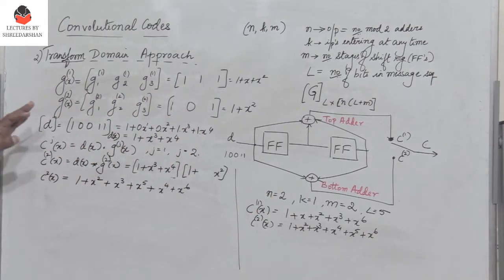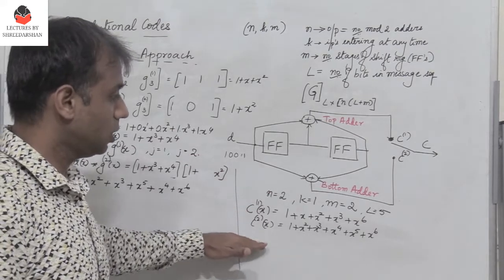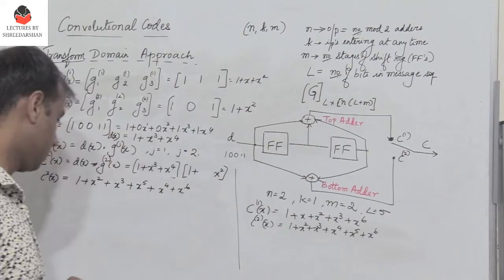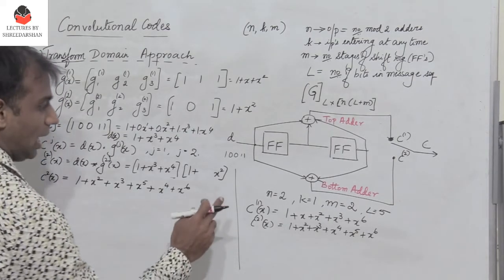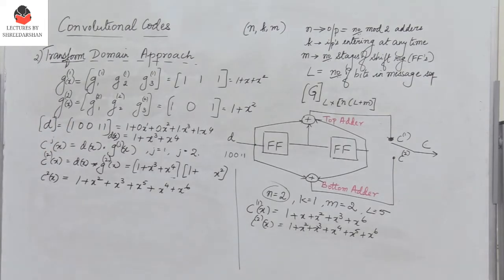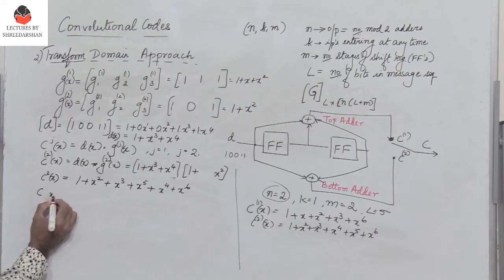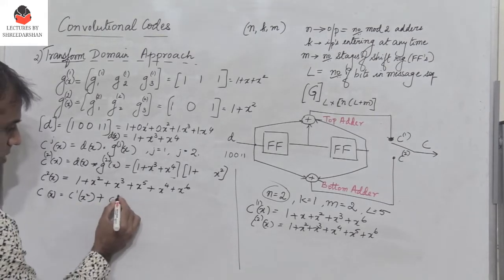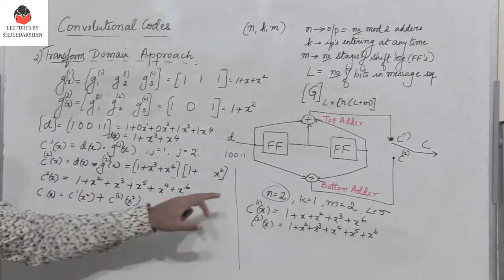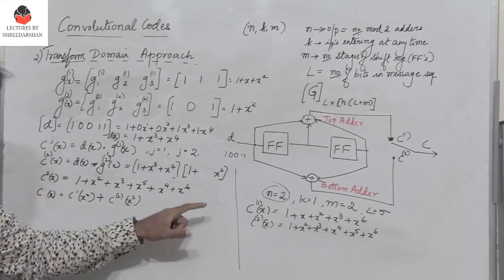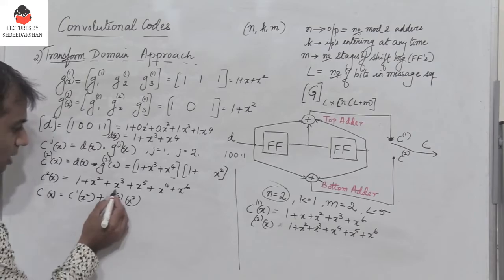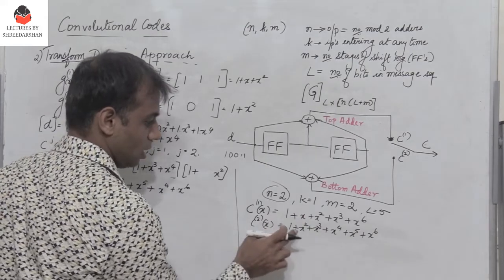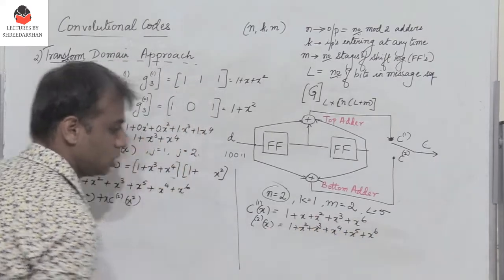In the previous lecture video we already got the output and realized there were 14 bits in total. To get the final output of the encoder with n=2 (two outputs), we form C(x) = C1(x²) + x · C2(x²). Since n=2, we replace x by x² in both C1(x) and C2(x), then multiply C2(x²) by x.